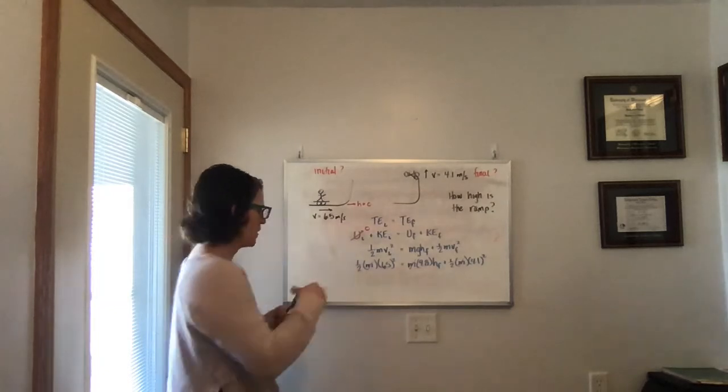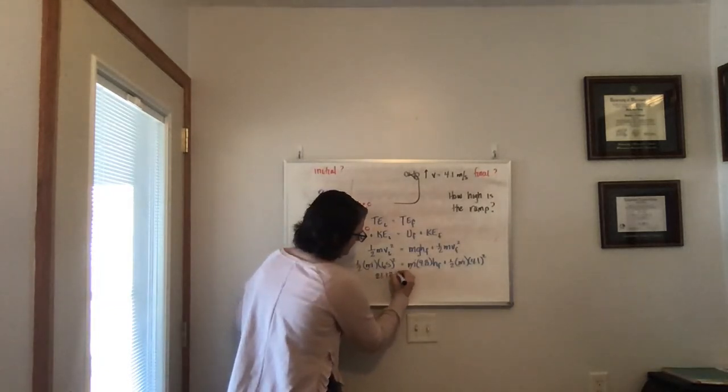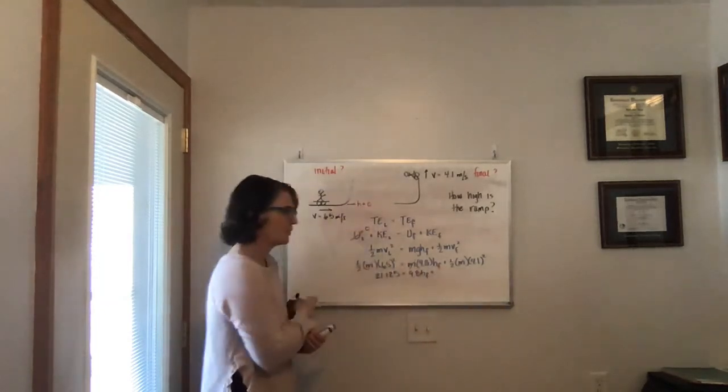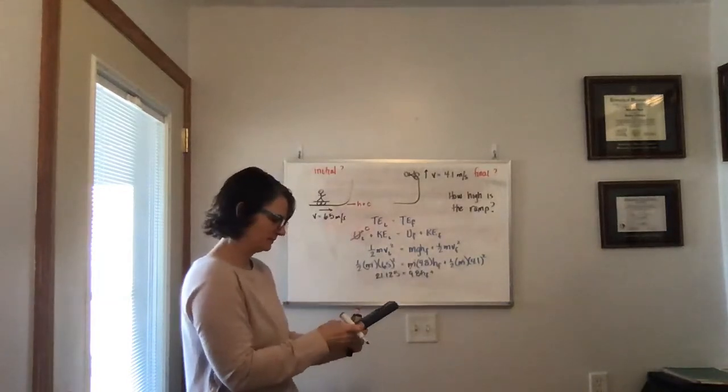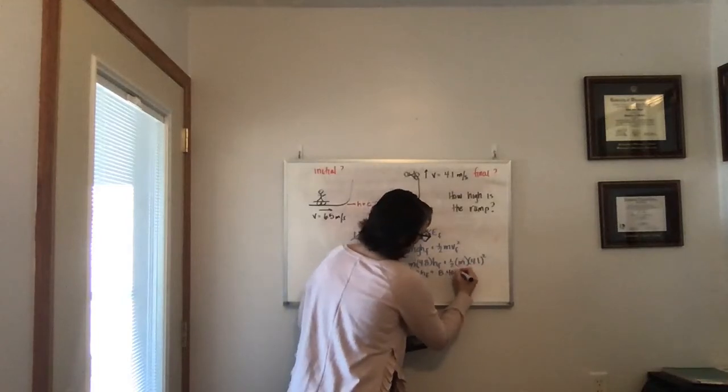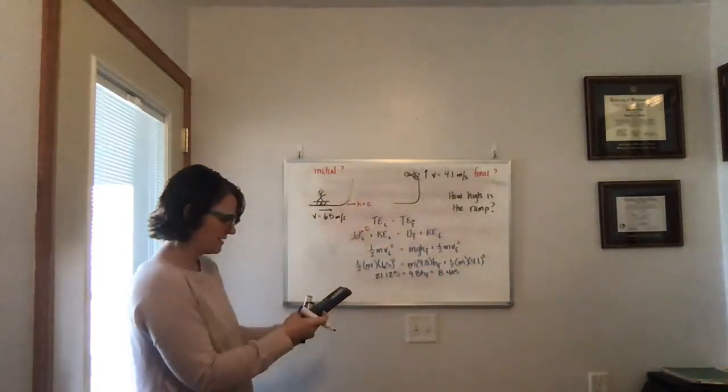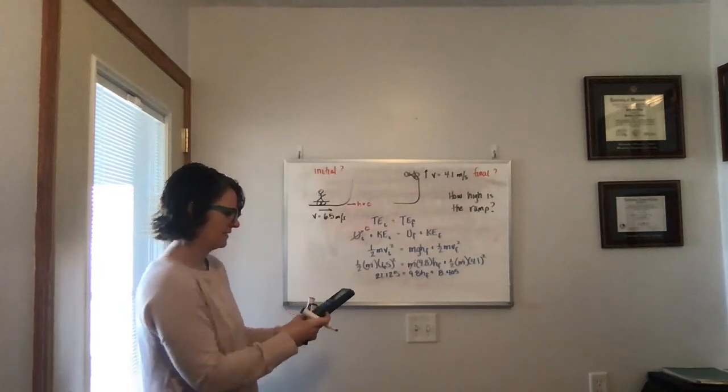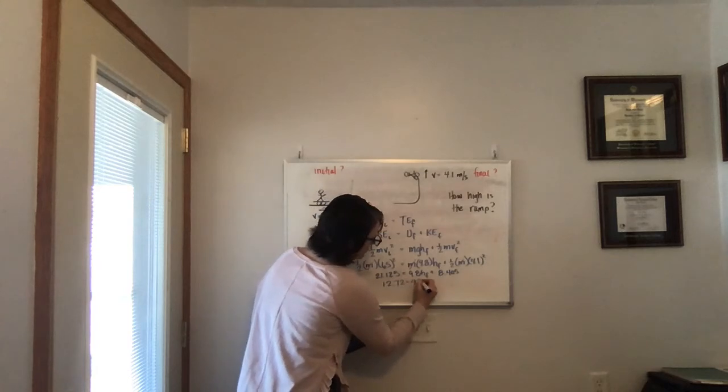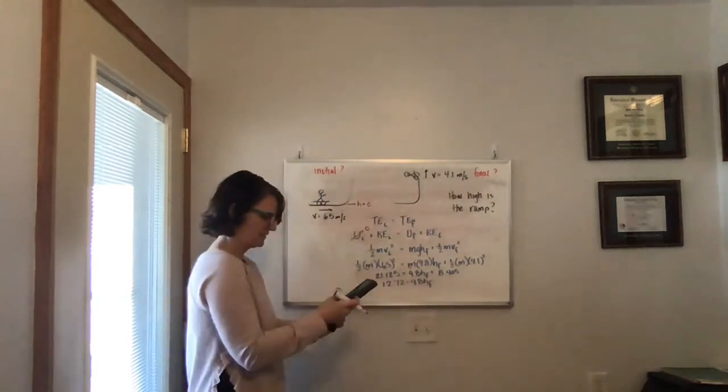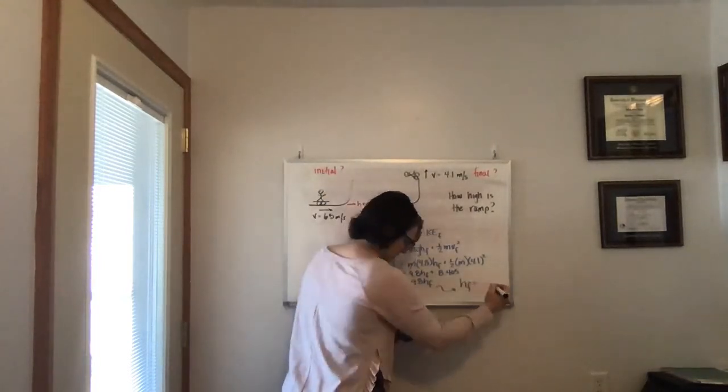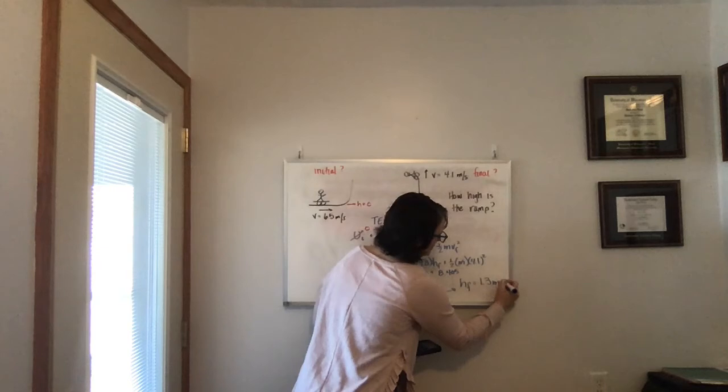That's 21.125 is equal to 9.8 times my final height, plus one half times 4.1 squared, which is 8.405. I bring 8.405 to the other side, and I get 12.72 equals 9.8 times the final height, and I divide by 9.8. And I get a height equal to 1.3 meters.